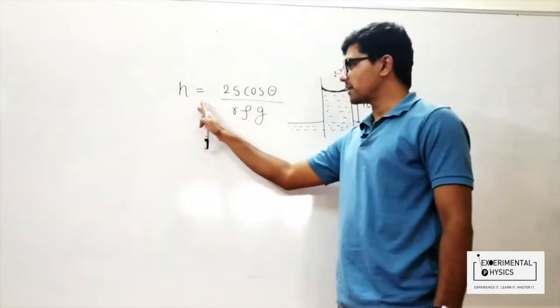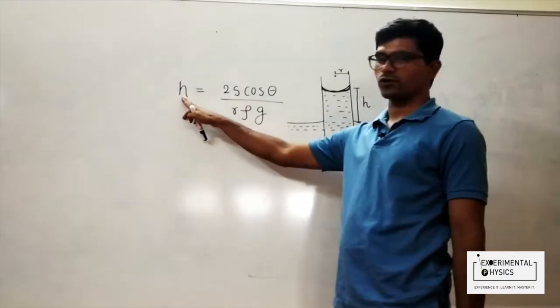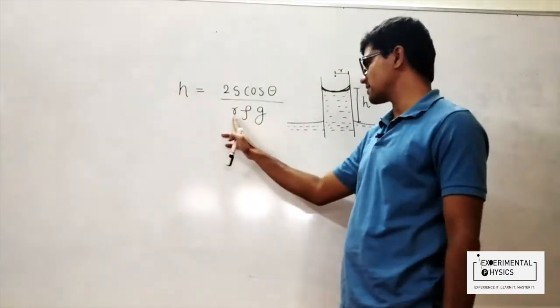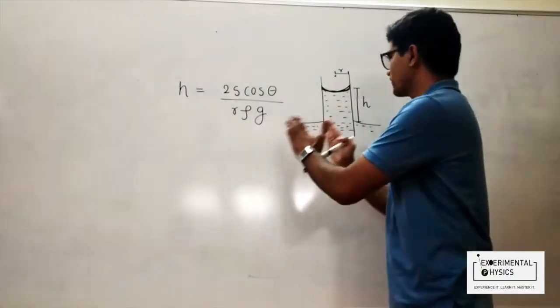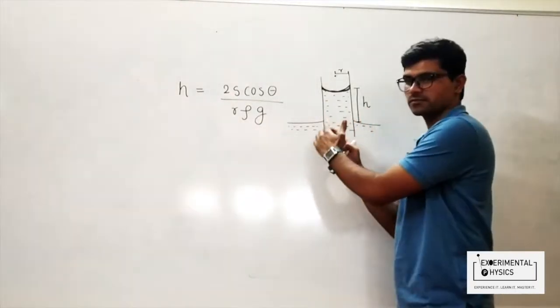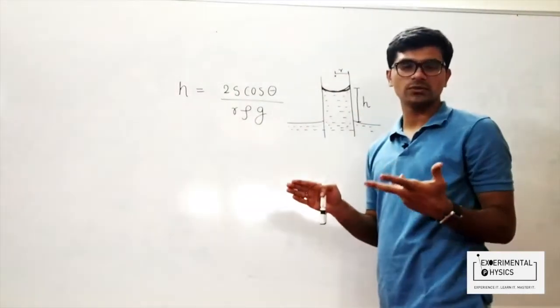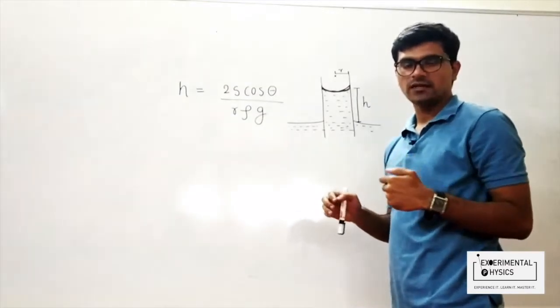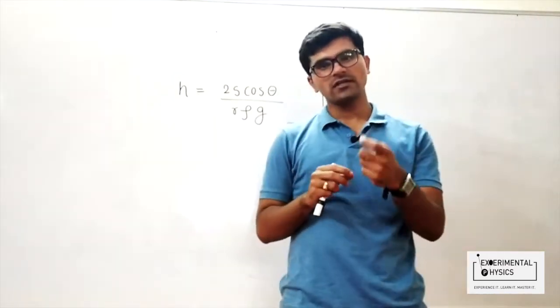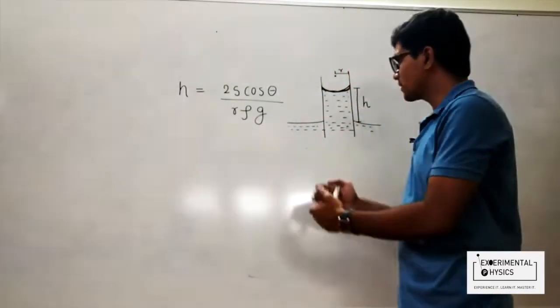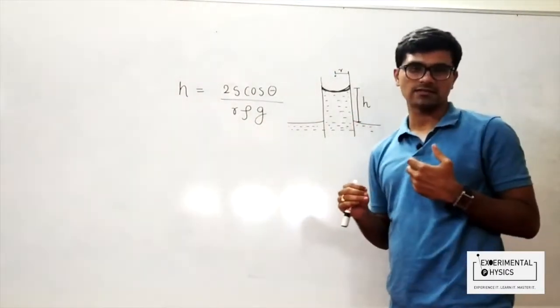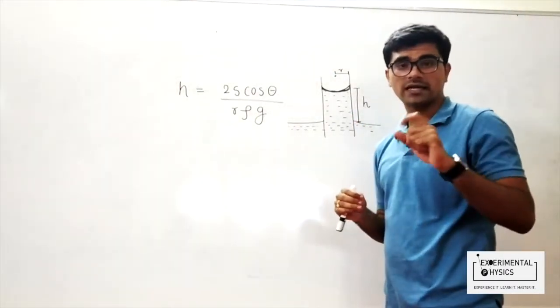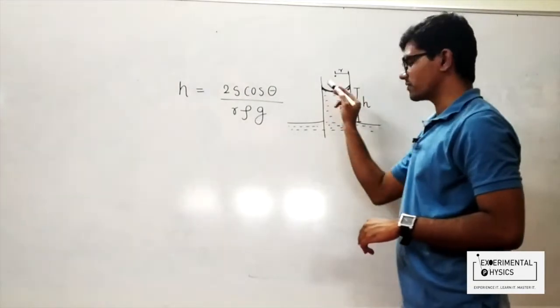This is the formula that we use to find out the height of the water column h. You can see that it is inversely proportional to r. So if I shrink this radius, water is going to rise even more; h is going to increase. In this video, we are going to see a very intuitive way to understand why the water rises in a capillary tube, and it has to do with this shape of the curvature.